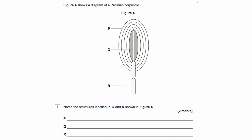Okay, let's go through the answers. P is the connective tissue, layers of lamellae, or capsule. Q is the nerve ending, or the unmyelinated part of the axon, so the axon of the sensory neuron. And R is the Schwann cells, or the myelin sheath.